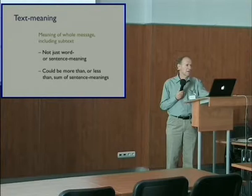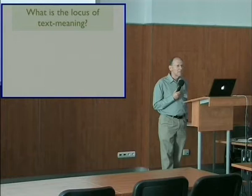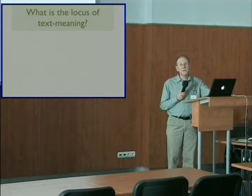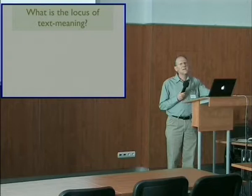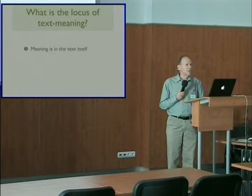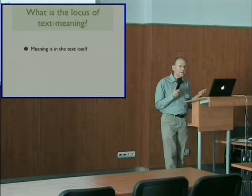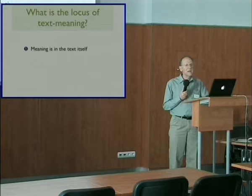Given all this, we can ask: where does text-meaning actually come from? That is, what is its locus — the place from which it arises? In philosophy and literary theory, there are three traditional answers to this question. The first is that text-meaning comes from the text itself. I mean, duh! The text is the linguistic element, so that's what has the meaning — how could it be any other way?